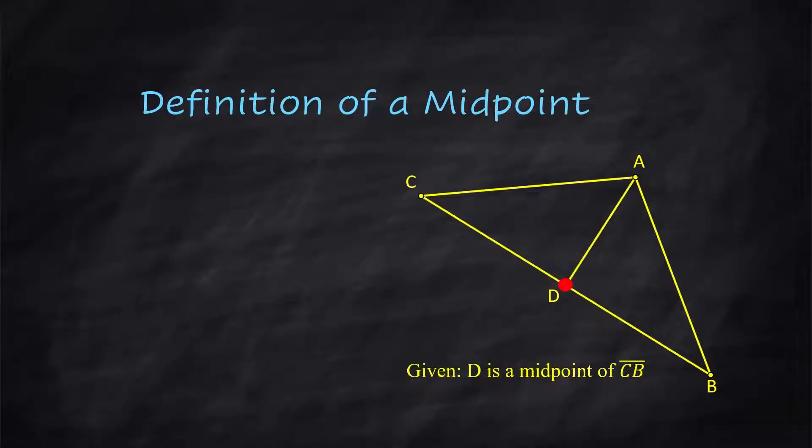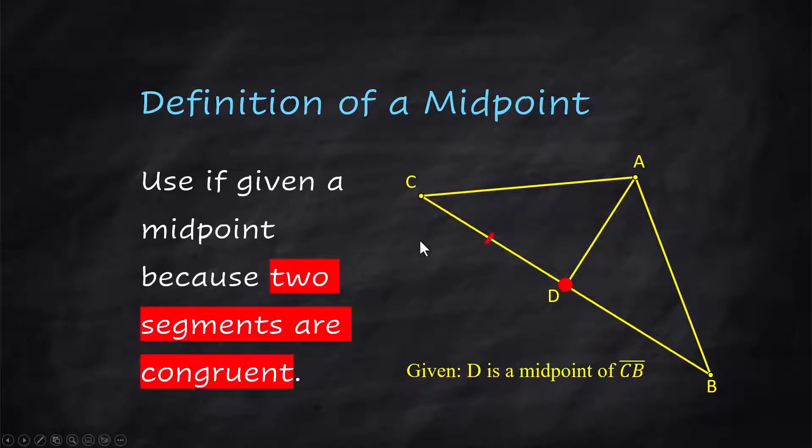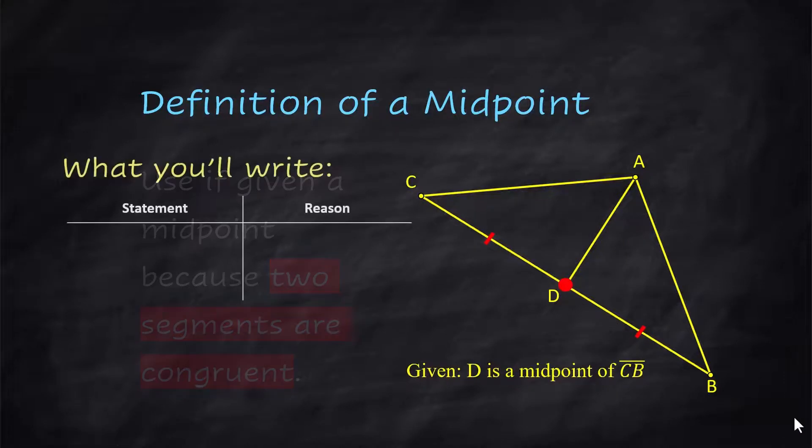Definition of a midpoint. In this diagram, you're given that D is the midpoint of CB. Midpoints are handy because they tell you that two segments are congruent without telling you that two segments are congruent. And so that's how you can use them in your proof.